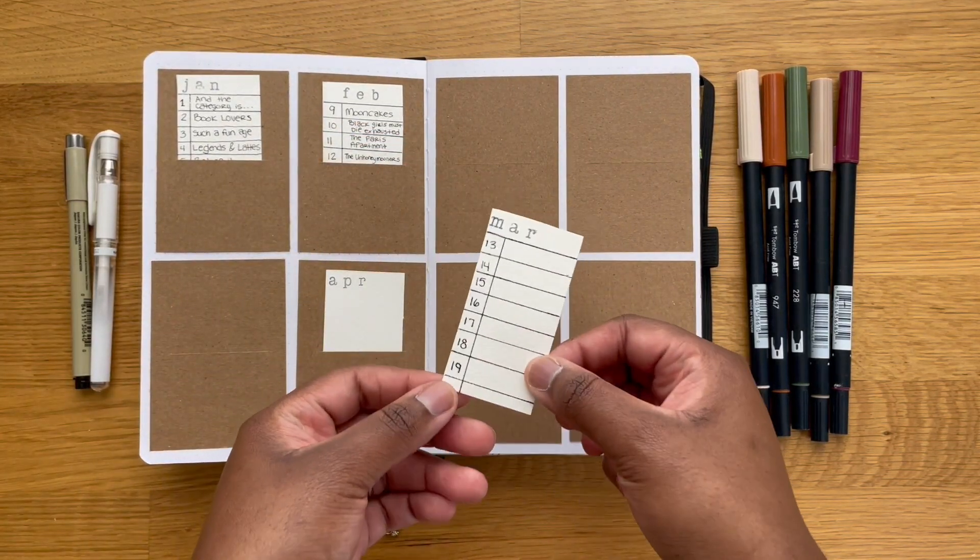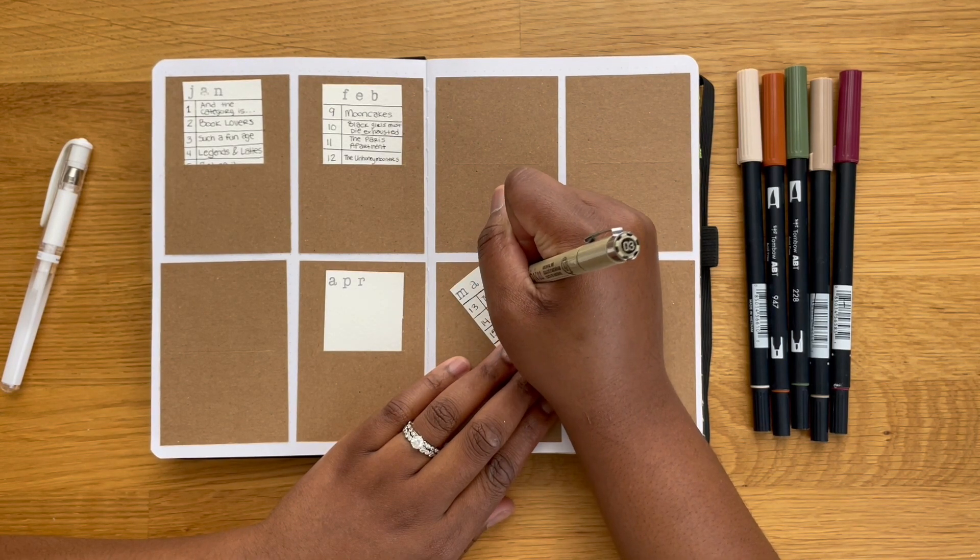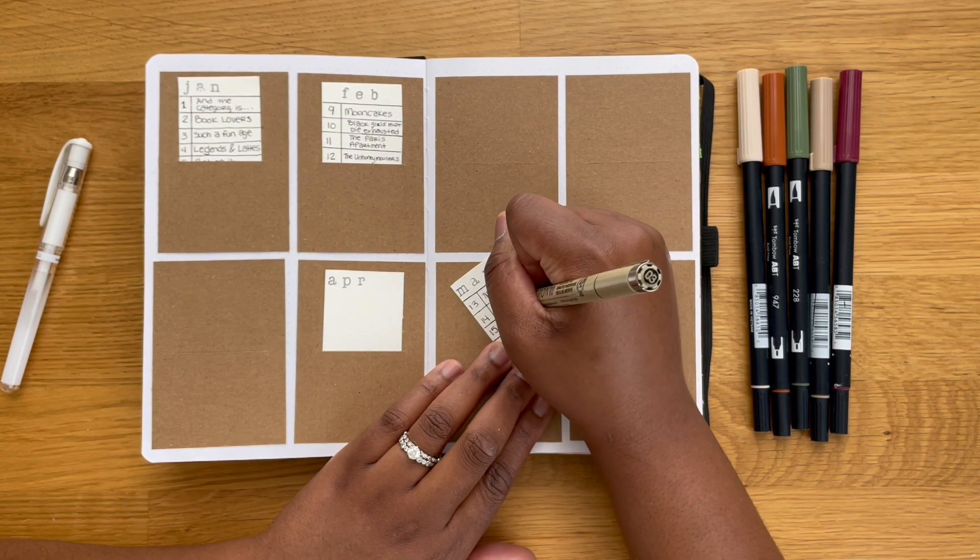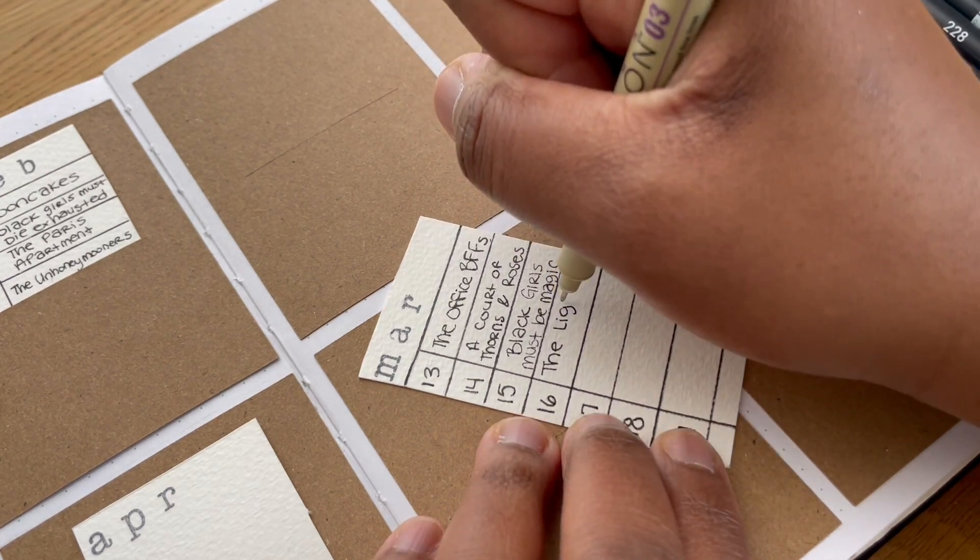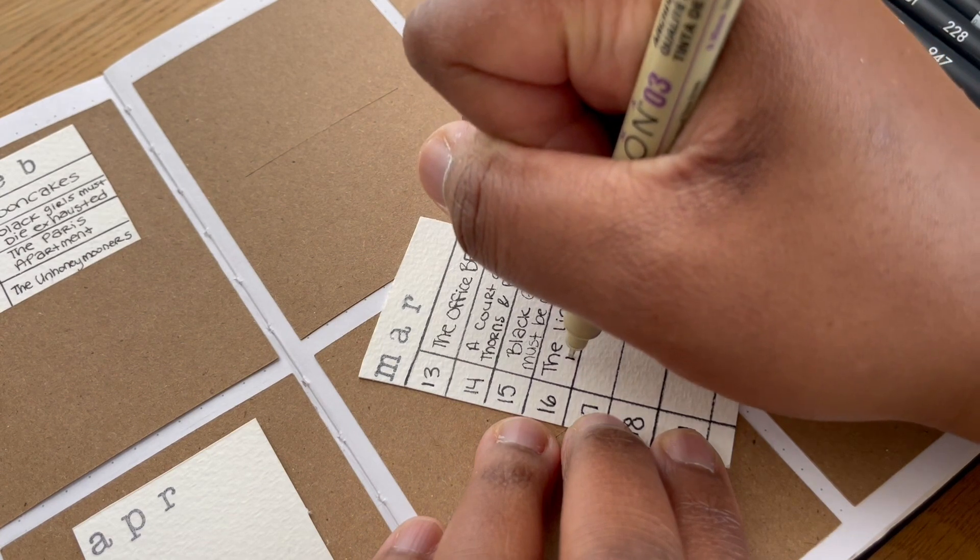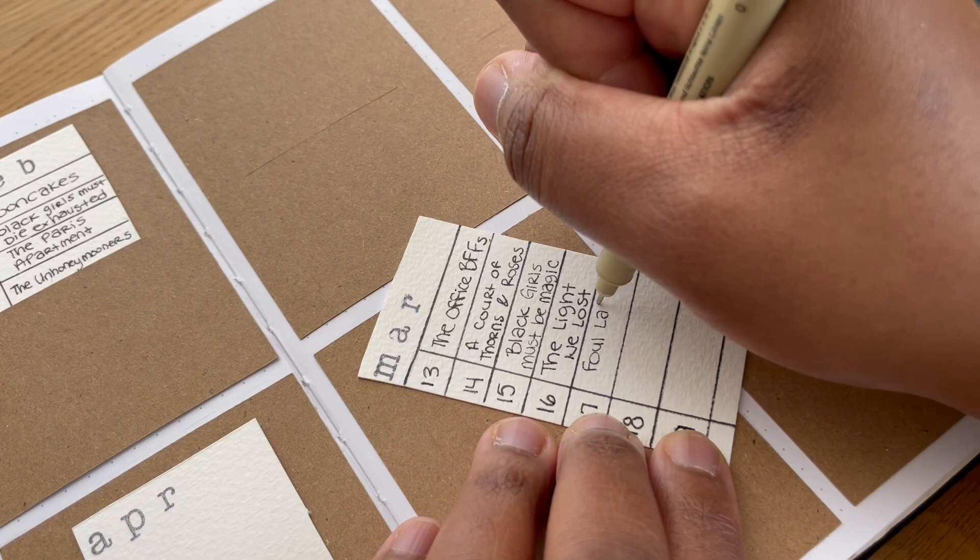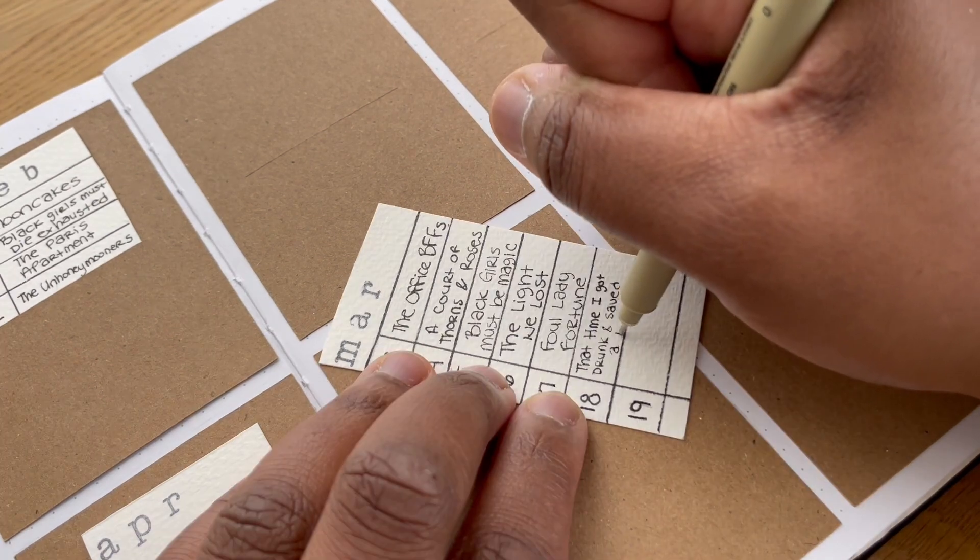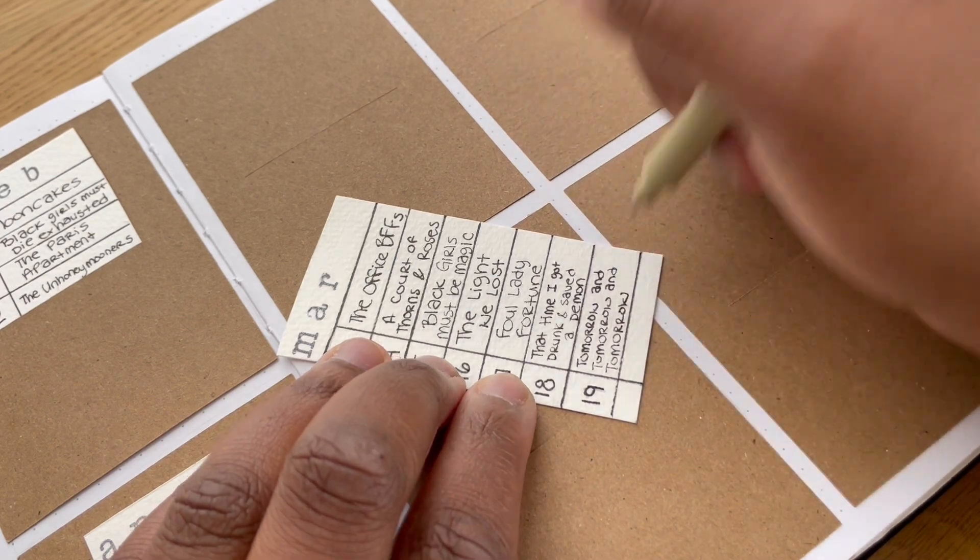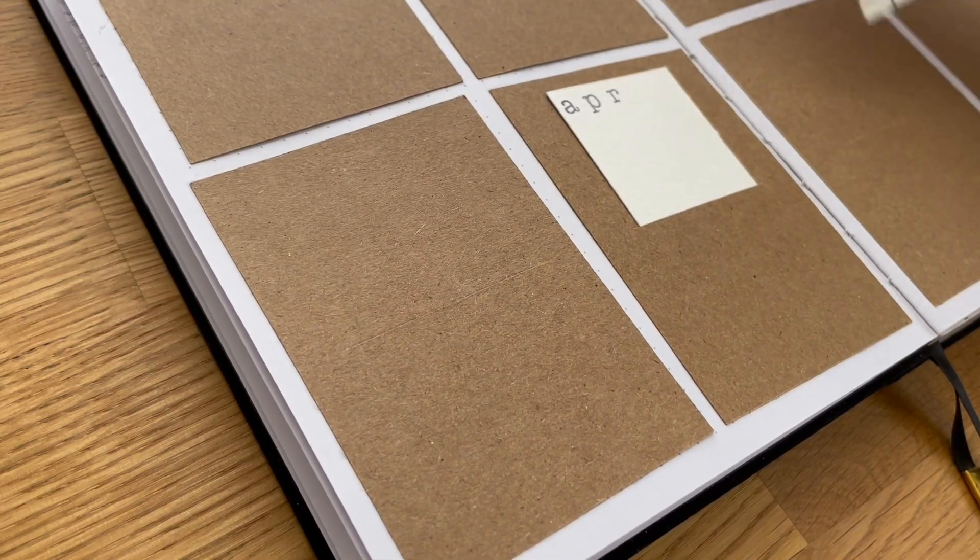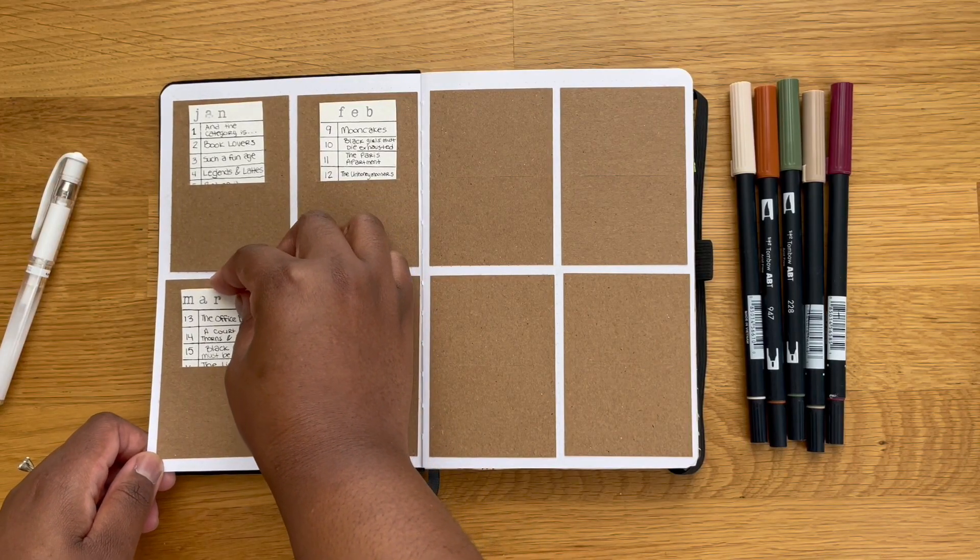I was able to finish seven books. I started off the month with The Office BFFs: Tales of the Office from Two Best Friends Who Were There, A Court of Thorns and Roses, Black Girls Must Be Magic, The Light We Lost, which honestly was a little bit of an experience because my mom and I did this read a book backward challenge. I also read Foul Lady Fortune, That Time I Got Drunk and Saved a Demon, and lastly I finished out the month with the book Tomorrow and Tomorrow and Tomorrow.